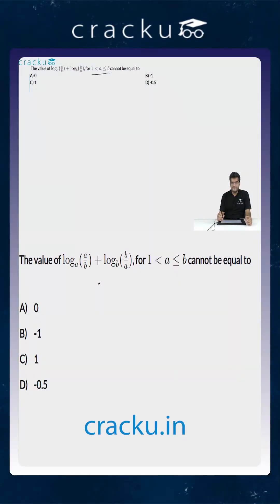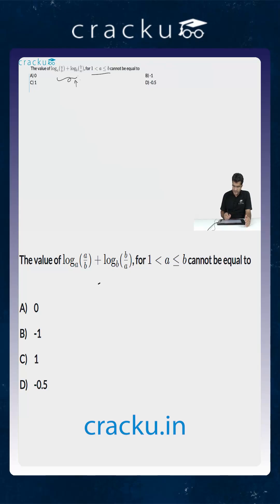In this question we are told that 1 < a ≤ b. We are given an expression and asked to find out which of the four given options cannot be the value of that expression. The expression equals log(a/b) to the base a plus log(b/a) to the base b.